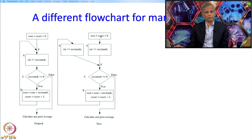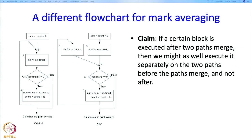When we come down for the first time, we execute the statement, then the second statement, then the condition check. On subsequent iterations, after the condition check we again execute that statement, then the second statement, then the condition check — exactly the same as before. The general claim is that if a certain block is executed after two paths merge, we can instead execute it separately on both paths before they merge and then omit it after the merge.